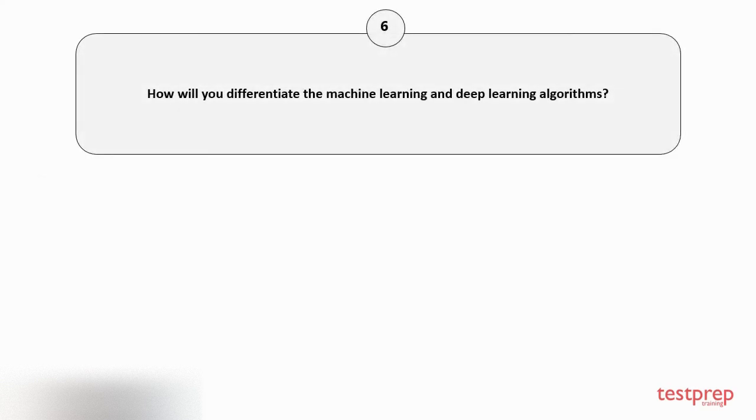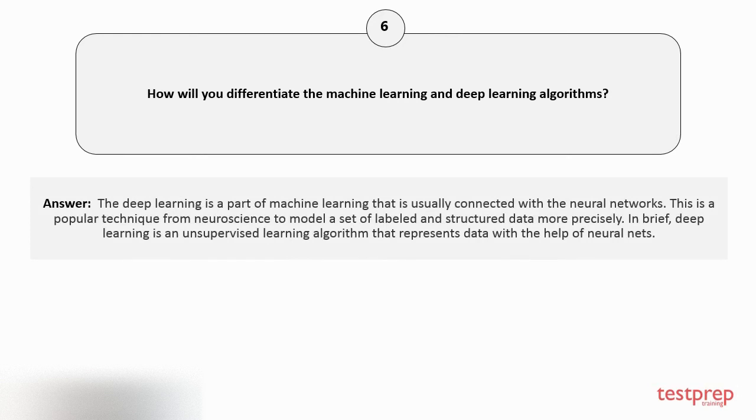Question number six: How will you differentiate machine learning and deep learning algorithms? Deep learning is a part of machine learning that is usually connected with neural networks. This is a popular technique from neuroscience to model a set of labeled and structured data more precisely. In brief, deep learning is an unsupervised learning algorithm that represents data with the help of neural nets.